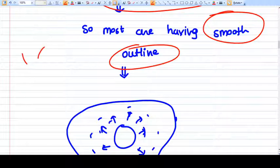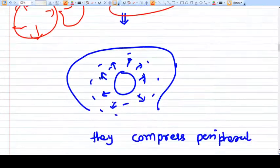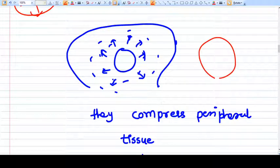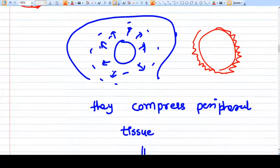Why are they smooth and without any angles? Because the cells keep developing in all directions. When they become bigger, they compress the peripheral tissue adjacent to them.